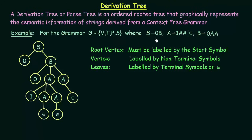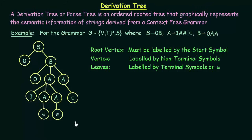The production rules are: S gives 0B, A gives 1AA and also epsilon or the empty symbol, and B gives 0AA. Here S is the start symbol, the variables are B and A, and the terminal symbols are 0 and 1. For this given grammar, this is the derivation tree that is formed.